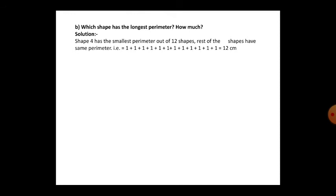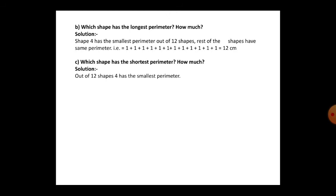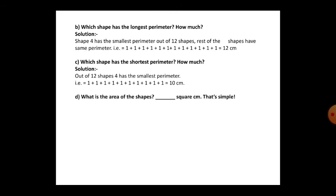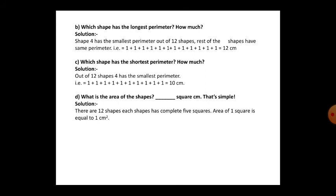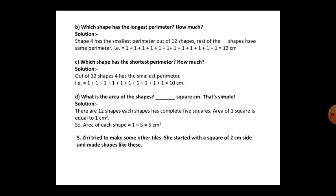Shape 4 has the smallest perimeter out of the 12 shapes. If you count shape 4, you will get less than 12 - you will get 10 centimeters. The rest of the shapes have a perimeter of 12 centimeters only. As for the area of each shape: there are 12 shapes and each shape has five squares completely. The area of one square is 1 square centimeter, so the area of each shape is 1 into 5, which is 5 square centimeters.